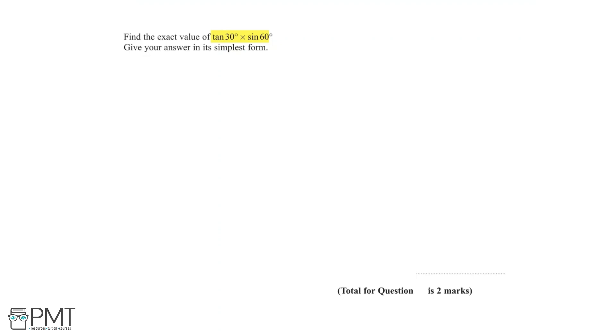Now from our knowledge of standard trig functions, we know that tan 30 is equal to 1 over root 3, and sin 60 is equal to root 3 over 2.